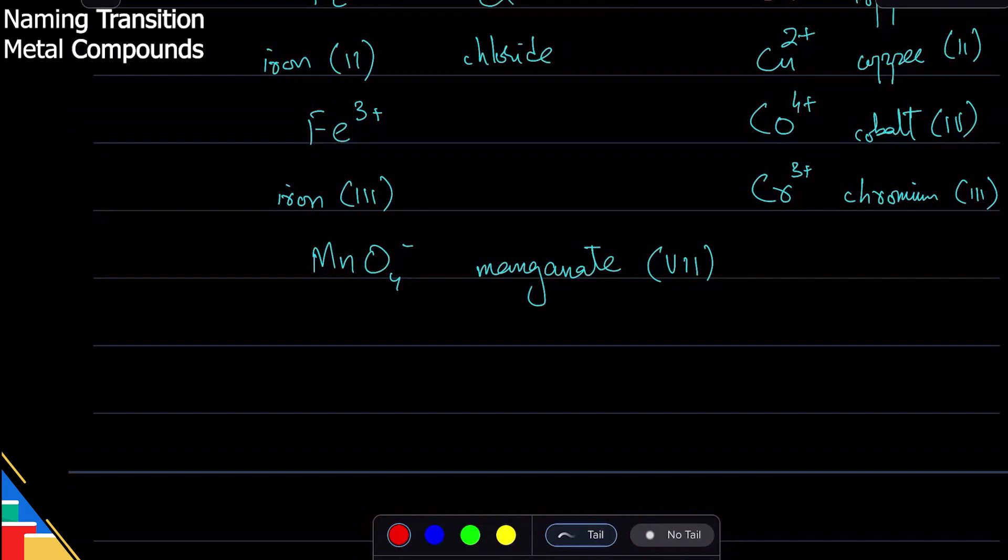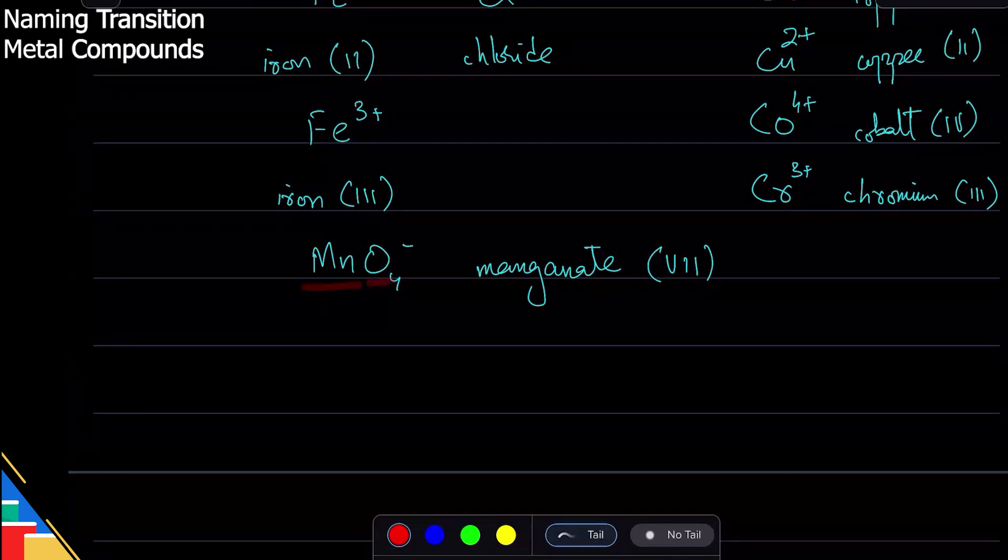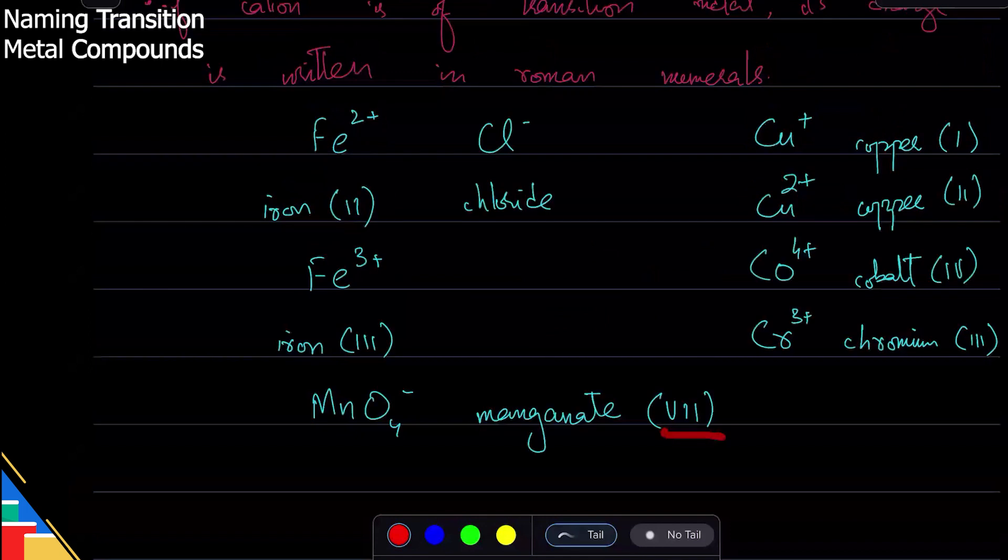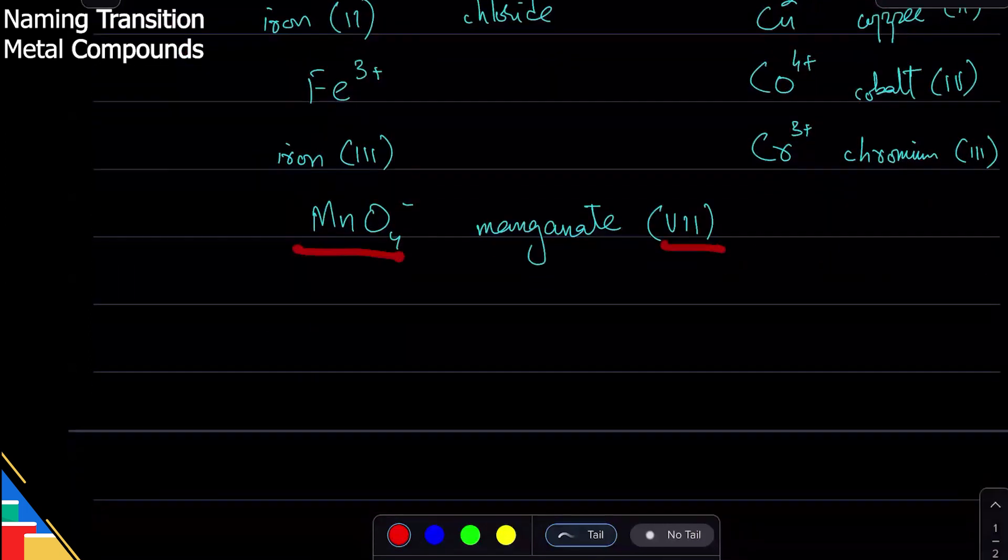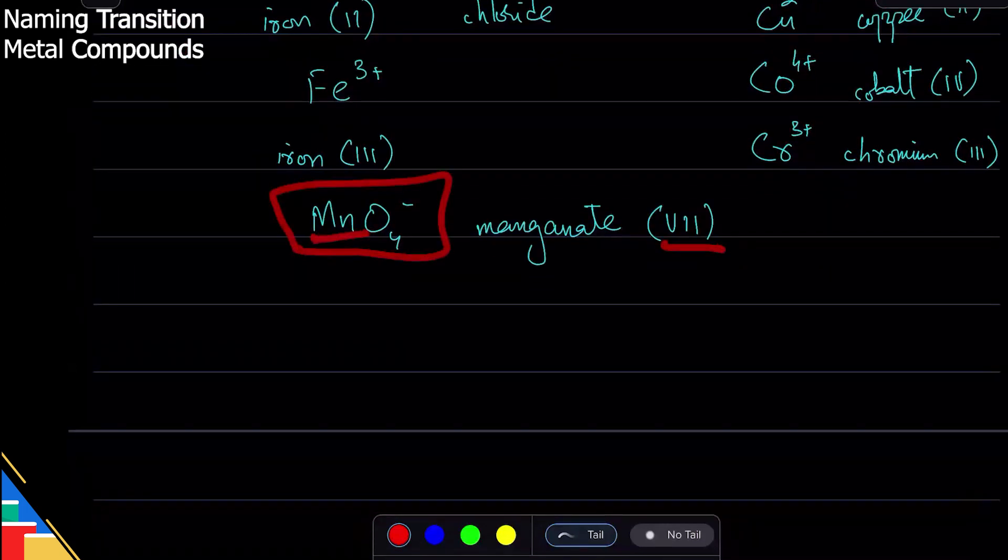What is it? What is that 7 supposed to be? Yeah, it's definitely the charge on that thing, and it's either the charge on this or this, because the whole thing has a negative one charge. So of course it's the charge on Mn here, because it is the charge of the transition metal. That's why in this thing, Mn has a charge of plus 7. Things can have plus 7, so this is an example of that.